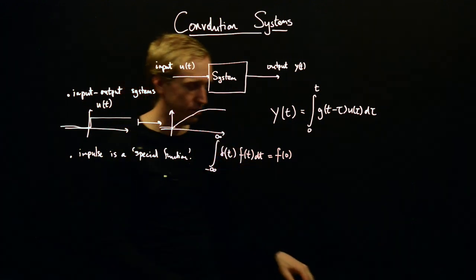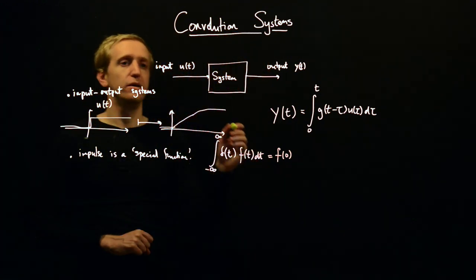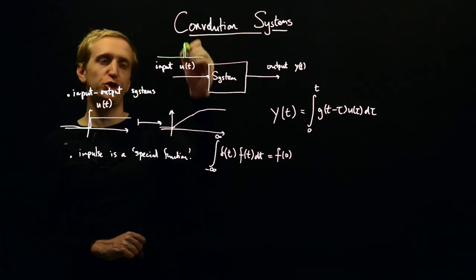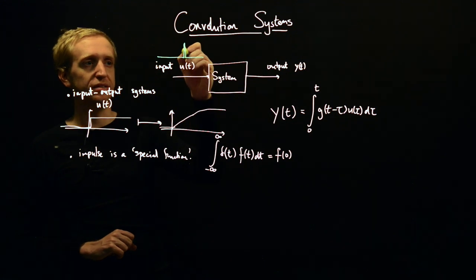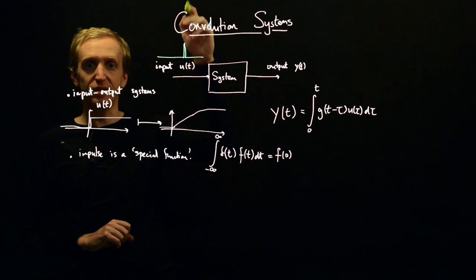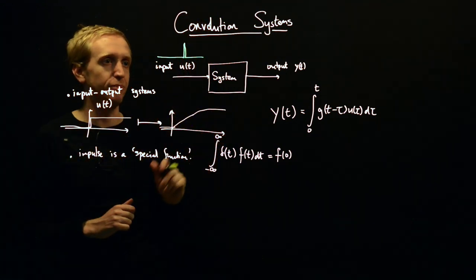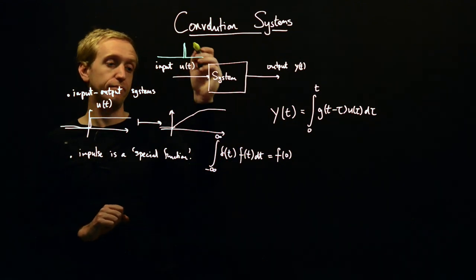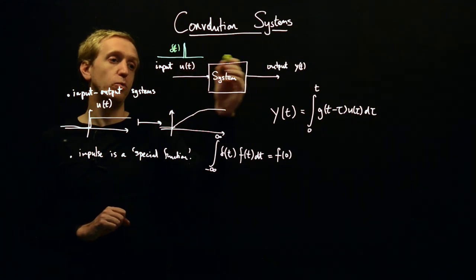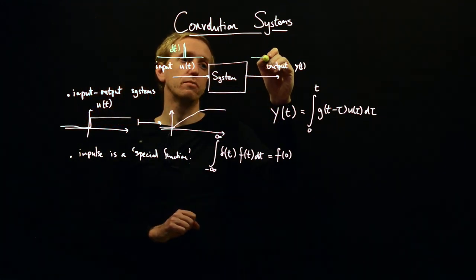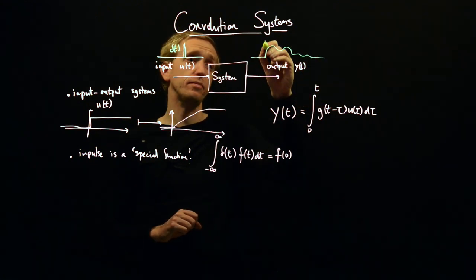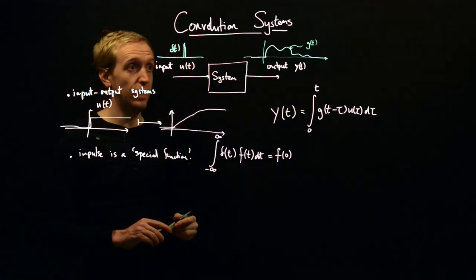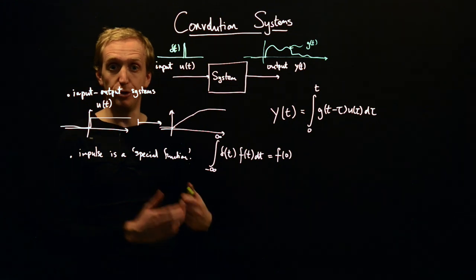In the input-output framework, you can imagine putting in input signals that look like very sharp spikes — a function of infinite height and infinitely narrow width, but with unit area. You just imagine giving the system a short sharp shock and seeing what happens. We apply the impulse delta(t) to the system and it produces an output. This specific output is called the impulse response: the response of our system to an impulsive input.